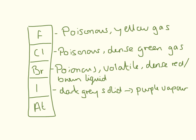So you need to know that fluorine is a poisonous yellow gas. Chlorine is a poisonous, dense green gas. Bromine is poisonous, very volatile, which means it evaporates easily, so it's going to be smelly. Dense red or brown liquid.